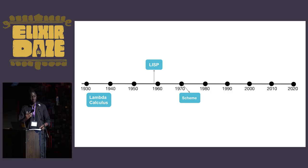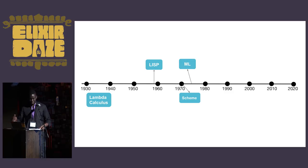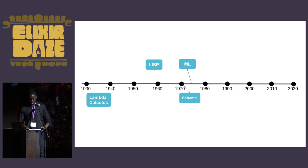In 1973, ML continues the process of building upon Lisp by adding static typing. It also introduces the novel concept of pattern matching for function arguments. Pattern matching would thereafter become a de facto standard in most functional languages.